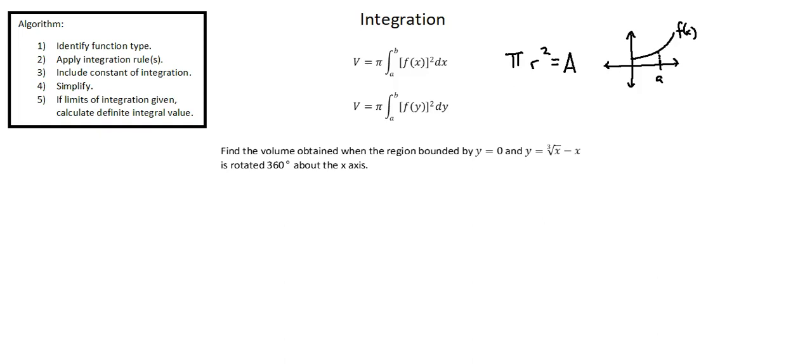is a radius of a circular slice of an object that we create by rotating this function 360 degrees around the x-axis. So this vertical length is a radius of one slice of the three-dimensional shape that we create by rotating the function around the x-axis.